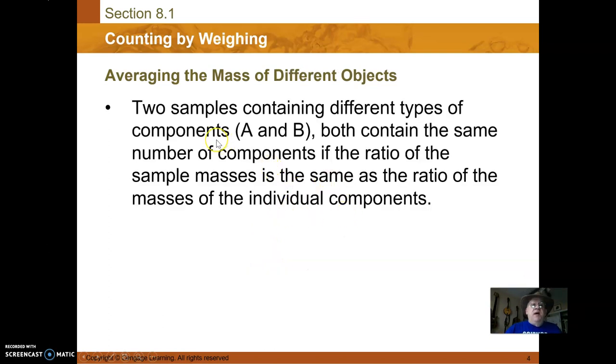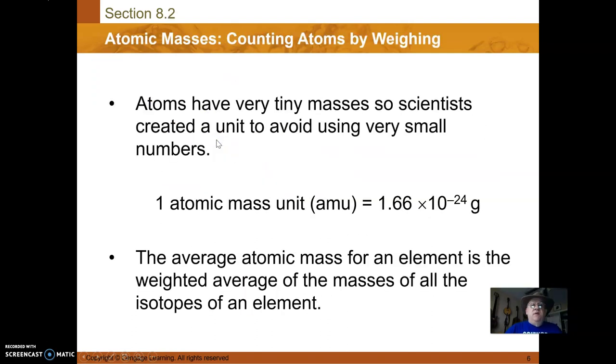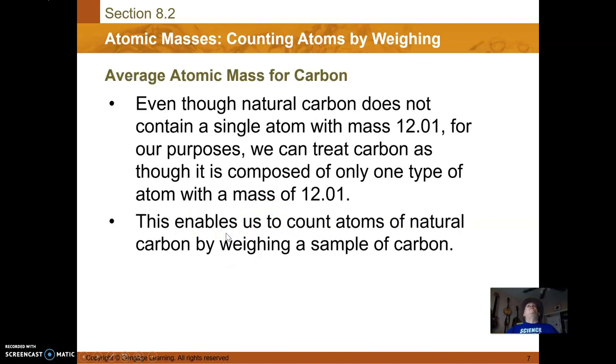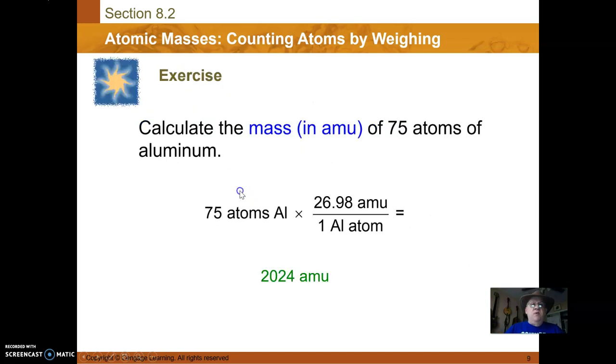One atomic mass unit, amu, is one of the 12.01 mass of carbon. One amu weighs 1.6 times 10 to the negative 24 grams. The atomic mass of an element or molecule is made up of amus. These are just different ways we started using conversion factors.